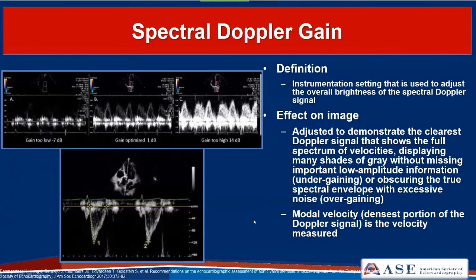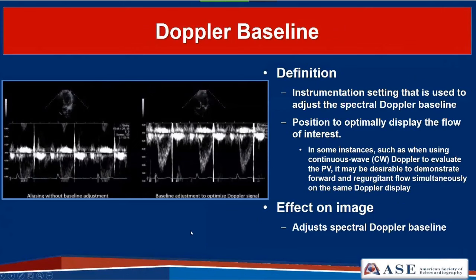The Doppler baseline function adjusts the baseline position. If you have aliasing and want to keep the signal as large as possible for measurement, you can start by adjusting the baseline and then adjusting the velocity scale to eliminate aliasing. In this case, we were only interested in flow going away from the transducer, so we adjusted the baseline up. For continuous wave Doppler through the pulmonic valve where you want to show both forward flow and a regurgitant jet, you'll want to show flow both above and below the baseline.